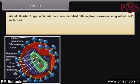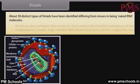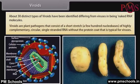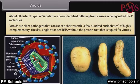About 30 distinct types of viroids have been identified, differing from viruses in being naked RNA molecules. Viroids are plant pathogens that consist of a short stretch — a few hundred nucleobases — of highly complementary, circular, single-stranded RNA without the protein coat that is typical for viruses.